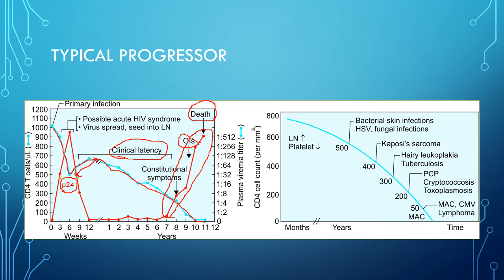A second figure shows CD4 T cell count and progression of different opportunistic infections. When CD4 drops from 800 to 500, there is bacterial skin infection, oral thrush, HSV (herpes simplex virus) infection, and fungal infection. From 500 to 400, Kaposi's sarcoma appears. From 400 to 300, opportunistic infections become more serious: hairy leukoplakia and TB. From 300 to 200, cryptococcal infection and toxoplasmosis develop. Below 200, cytomegalovirus infection and lymphoma appear.